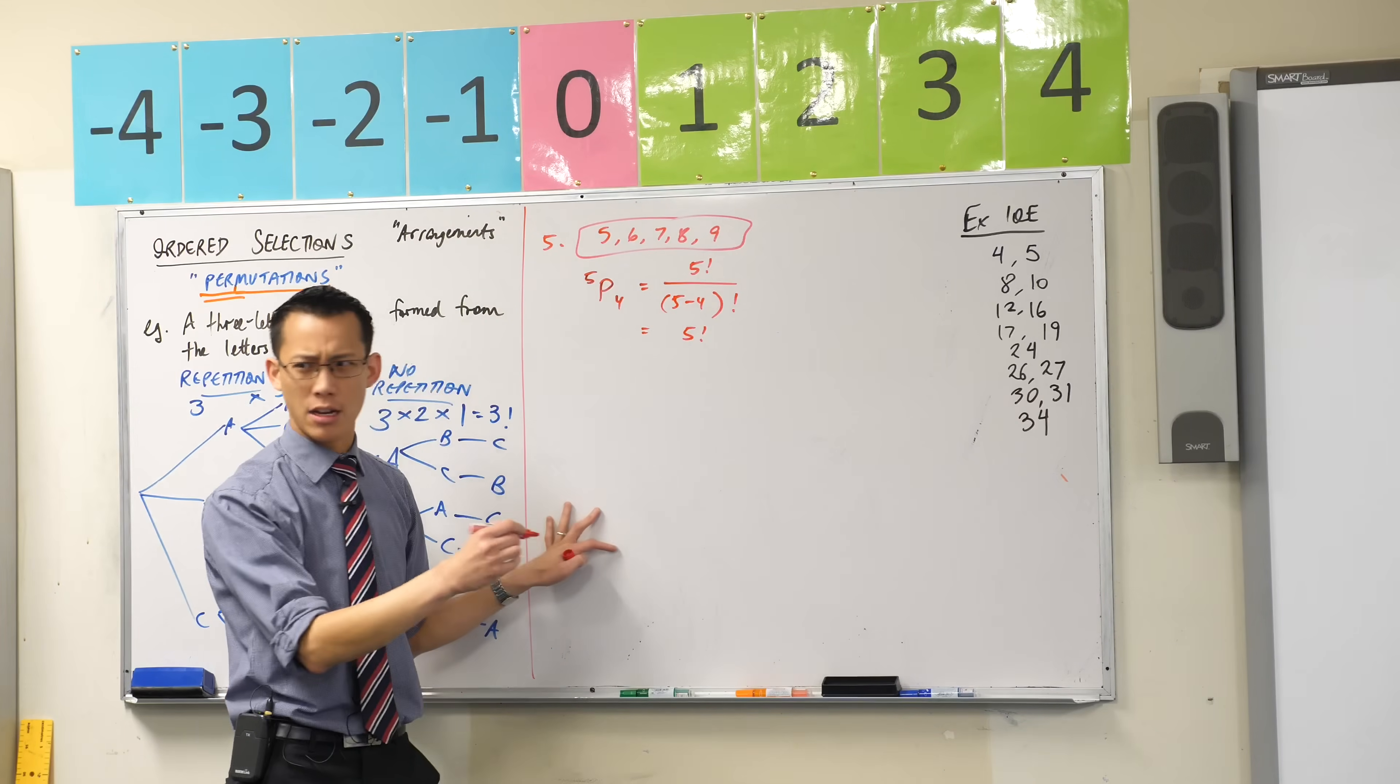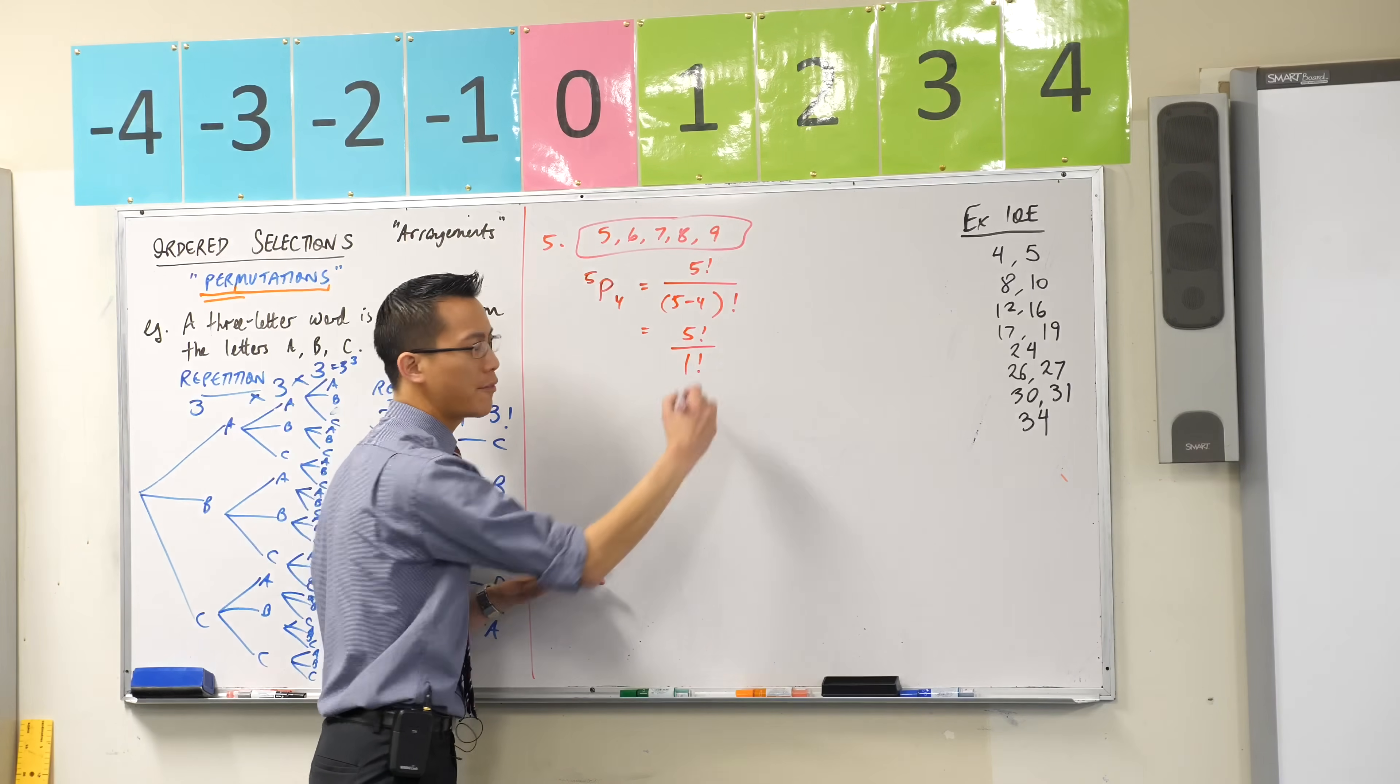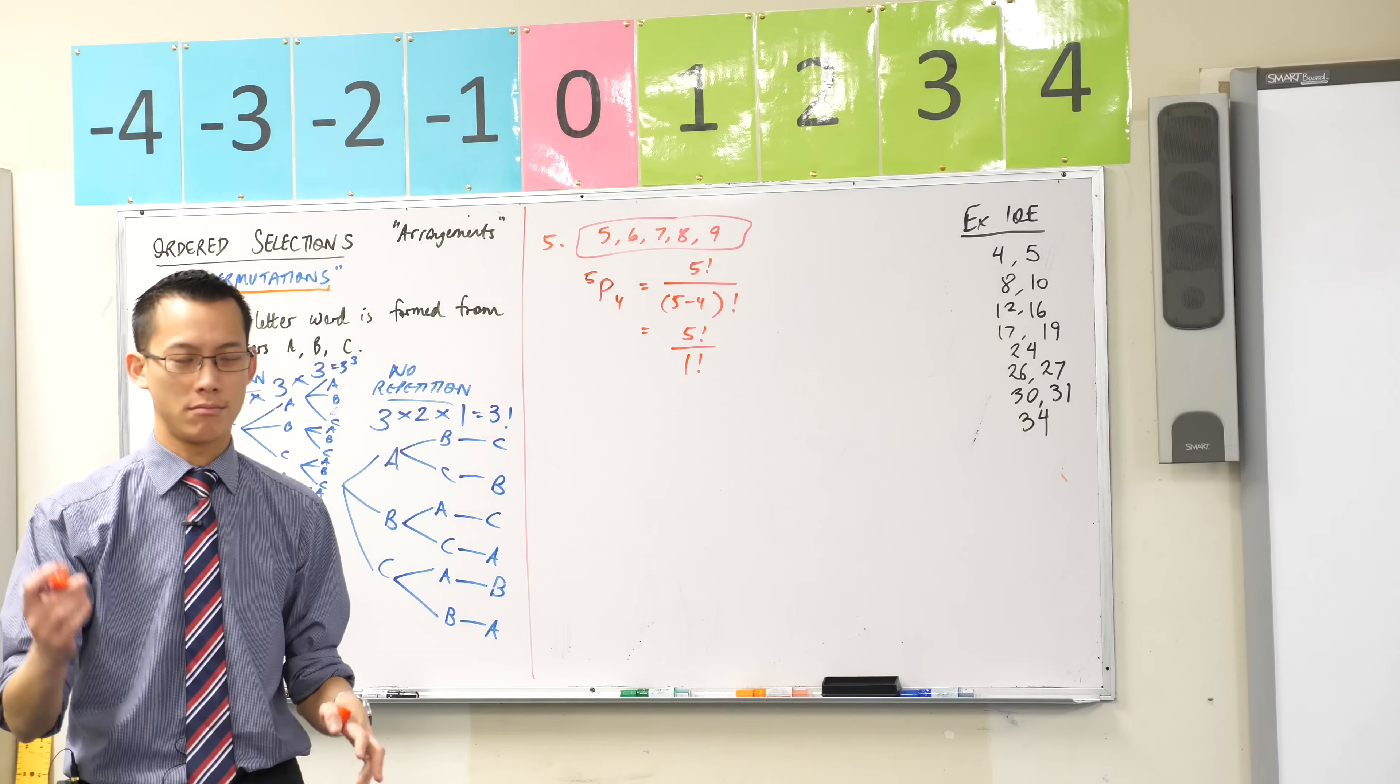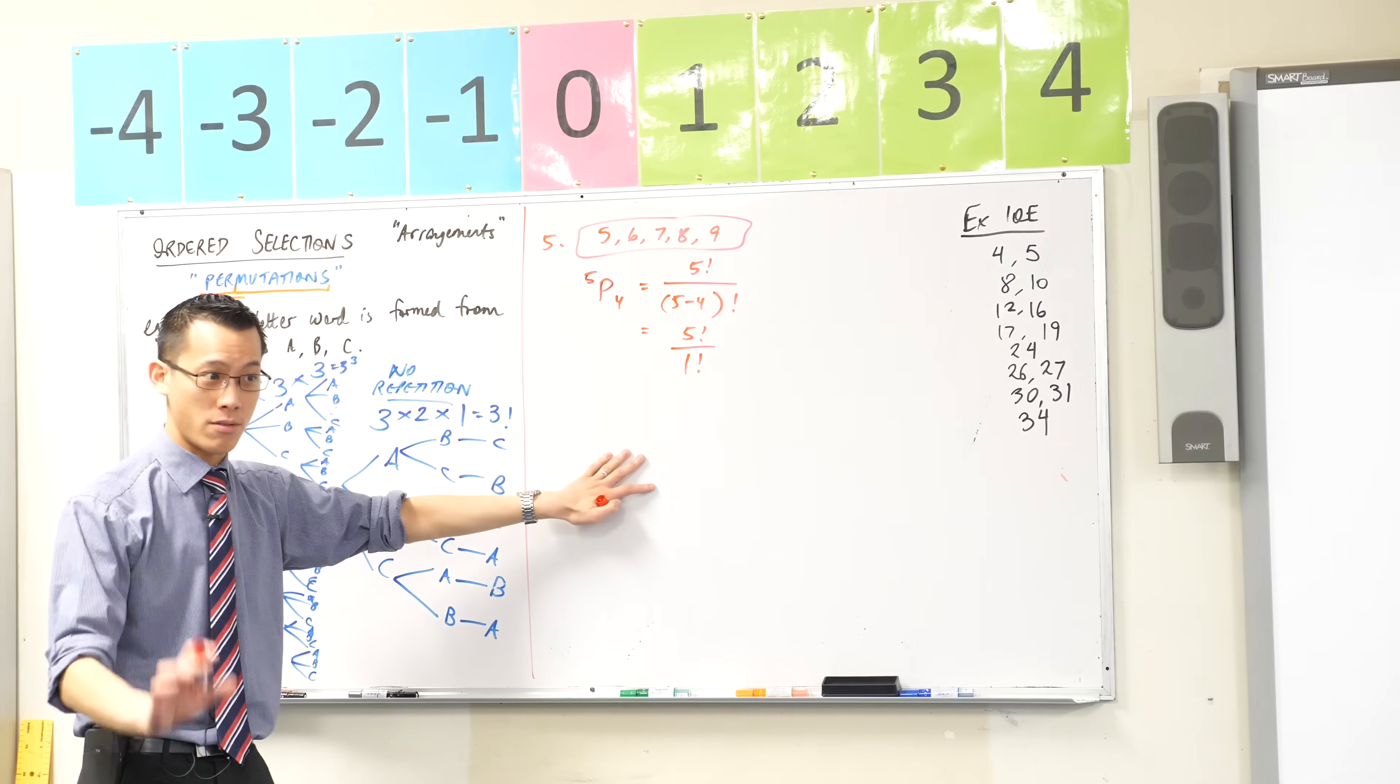5 factorial happens to be, I think, 120 from memory. And then on the bottom there, you've got 1 factorial. Now 1 factorial, of course, is just 1 times... Well, it's just 1. So you're just going to get 120 out of that. That should be your answer.